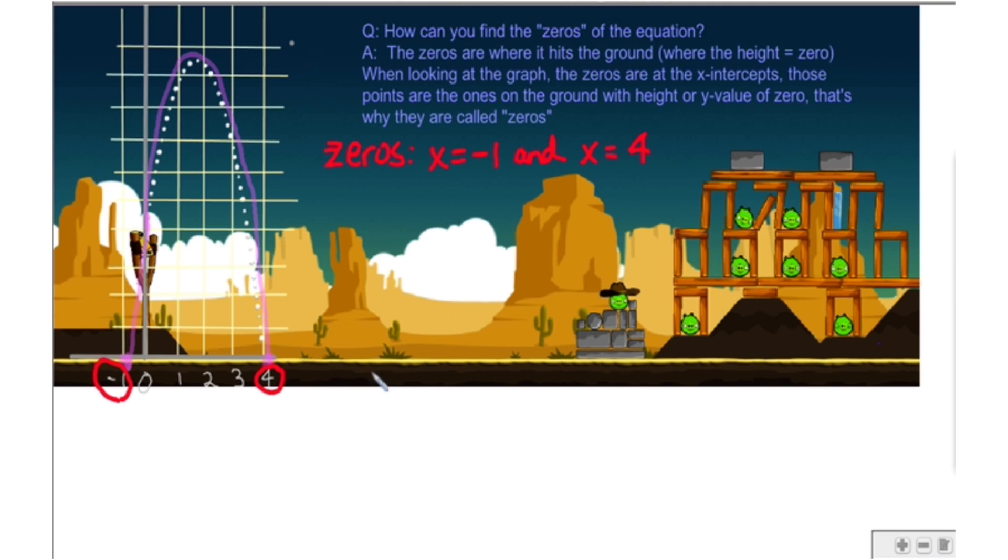So we have two zeros because we have two points right here and right here, where the graph has a height of zero, where the y-coordinate is zero. And that happens when x equals 4 and x equals negative 1.